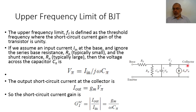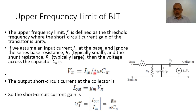The output current at the collector for short circuit is Gm multiplied by Vpi. So the short circuit current gain is I_output over I_input, which equals Gm·Vpi divided by jωCpi·Vpi. Therefore, the magnitude of the short circuit current gain is Gm over ωCpi.